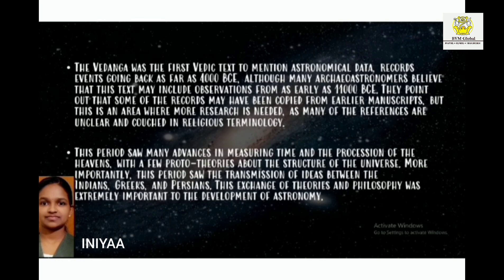Vedanga was the first Vedic text to mention astronomical data, recording events going back as far as 4000 BCE, although many archaeoastronomers believe this text may include observations from as early as 11000 BCE. Some records may have been copied from earlier manuscripts, but this is an area where more research is needed, as many references are unclear and couched in religious terminology.